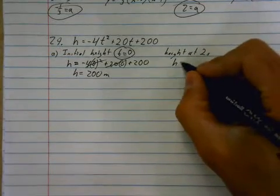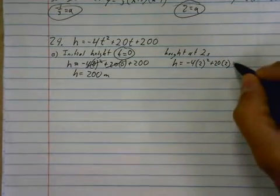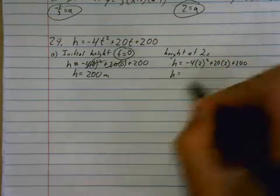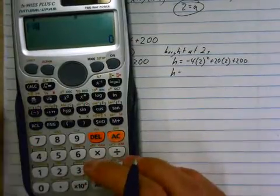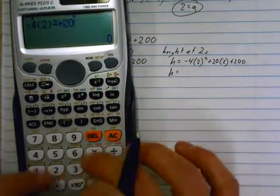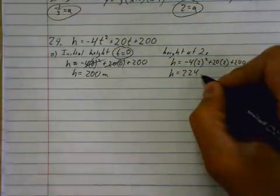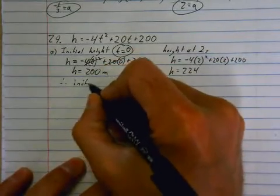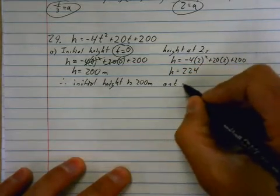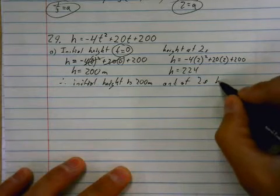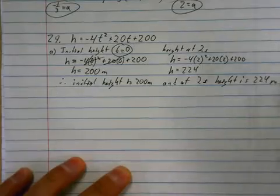Next one. Height at two seconds. This is a little bit more required. So you plug your twos in for time, and now, if you want, you can solve each of these separately, but I wouldn't suggest it. You probably have a better chance of getting it right if you just fire it all through your calculator right now. So height here is equal to 244. Therefore, initial height is 200 meters, and at two seconds, height is 224 meters.